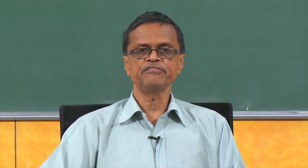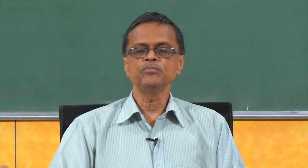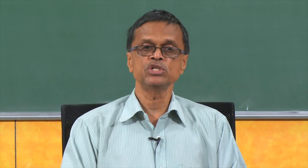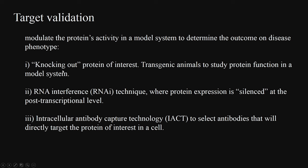Once you have identified the target, you need to do target validation. You need to modify that particular activity of the protein to be sure whether it is involved in the disease phenotype. You knock out that particular protein using transgenic animals — animals which have certain proteins of interest knocked out. For example, in diabetes, you may have animals with insulin production knocked out. You can also use RNA interference technique where the protein expression is silenced at the post-transcriptional level, meaning the protein is not produced, to be very sure that is the protein involved in that disease.